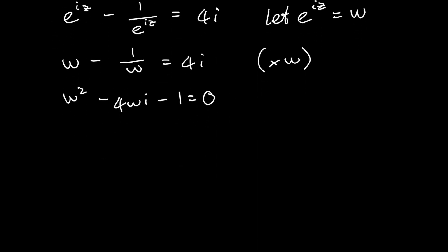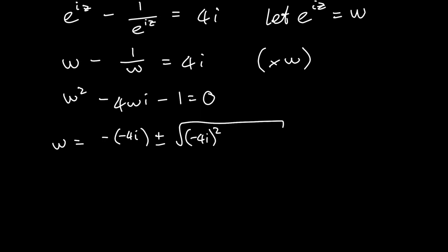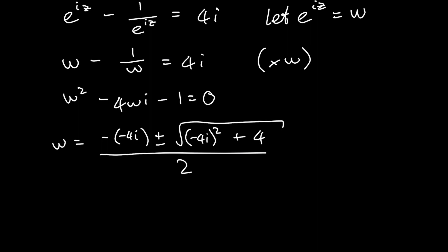Now we have a standard quadratic equation and we need to solve it using the quadratic formula. So w is equal to negative b — which is going to be negative negative 4i, since the coefficient of w is negative 4i — plus or minus the square root of b squared, which is negative 4i squared, minus 4ac. Here a is 1 and c is negative 1, so 4 times 1 times negative 1 gives negative 4. And that's all over 2a, where a is 1, so the denominator is 2.